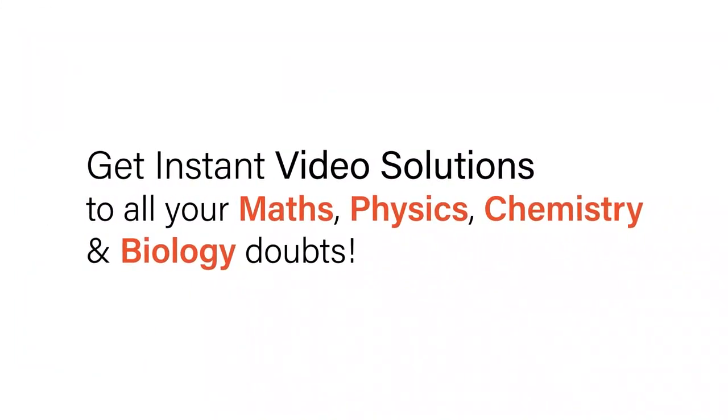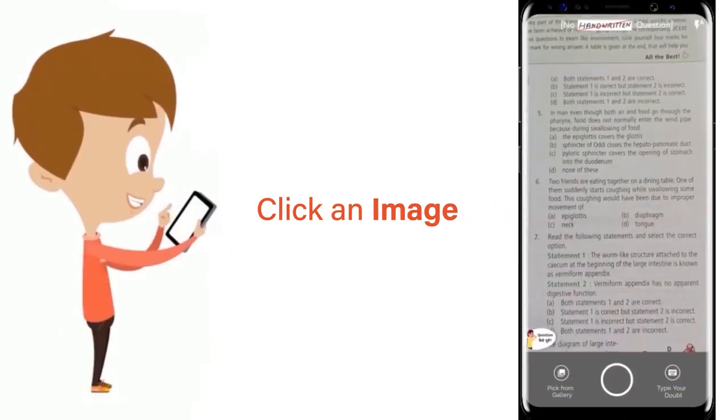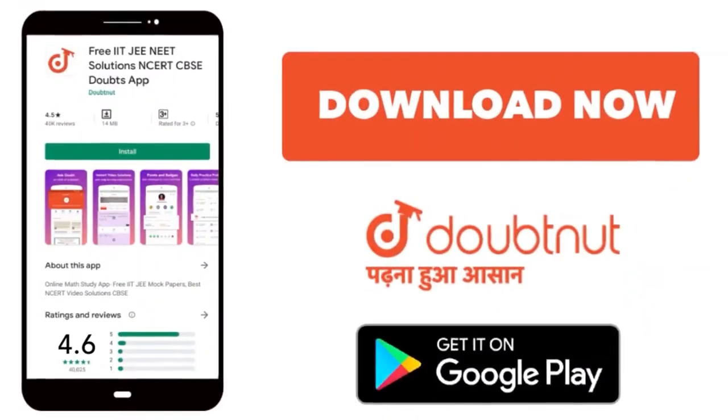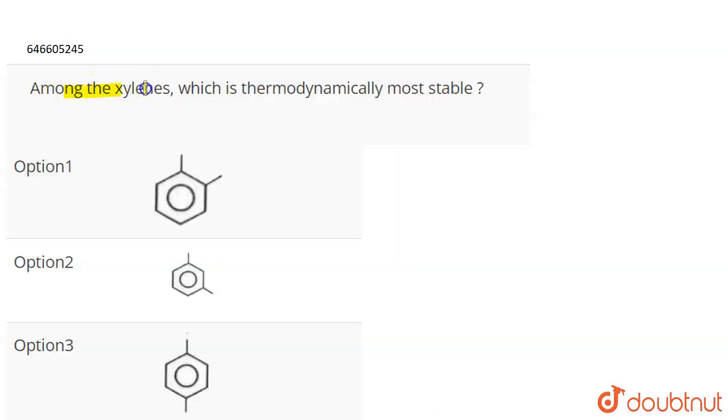With Doubtnet, get instant video solutions to all your maths, physics, chemistry, and biology doubts. Just click the image of the question, crop the question, and get instant video solution. Download Doubtnet app today. Question is: among xylenes, which is thermodynamically most stable?